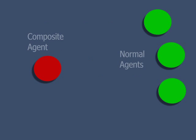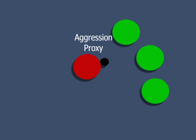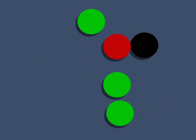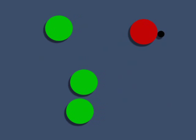Here we see a composite agent with an aggressive proxy seeking to push through an oncoming group of basic agents. As urgency increases, the agent's aggression proxy begins to grow. The other agents respond and open a path for the composite agent. Now, free of obstacles, urgency decreases and the proxy shrinks.